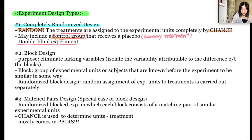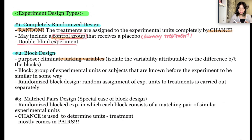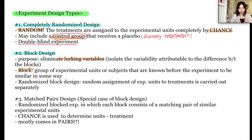Moving on to the second type of experiment, which is a block design. The main purpose of a block design is to eliminate the lurking variable — in other words, to isolate the variability attributable to the difference between the blocks or lurking variables so that we can see the differences caused by the treatments more clearly. A block is a group of experimental units or subjects that are known before the experiment to be similar in a certain way that is expected to affect the response to the treatments.